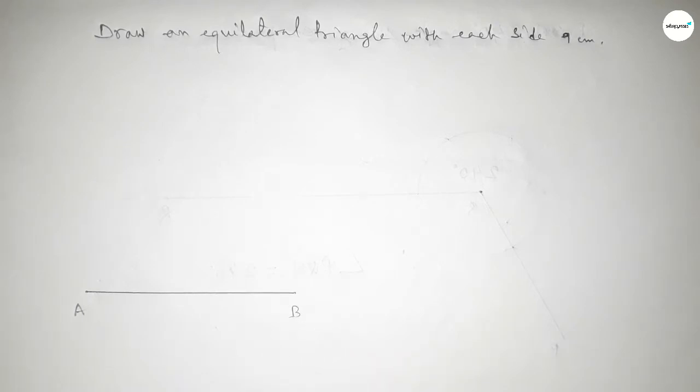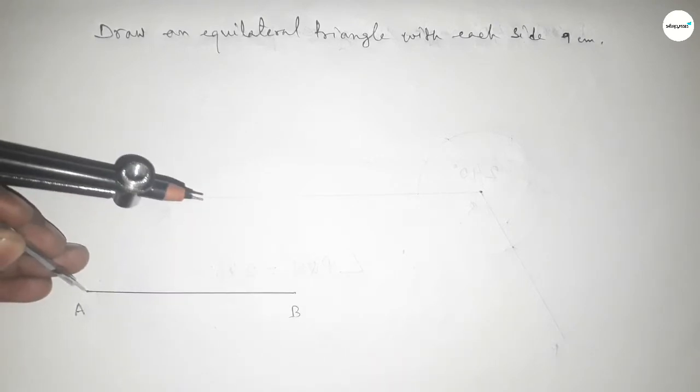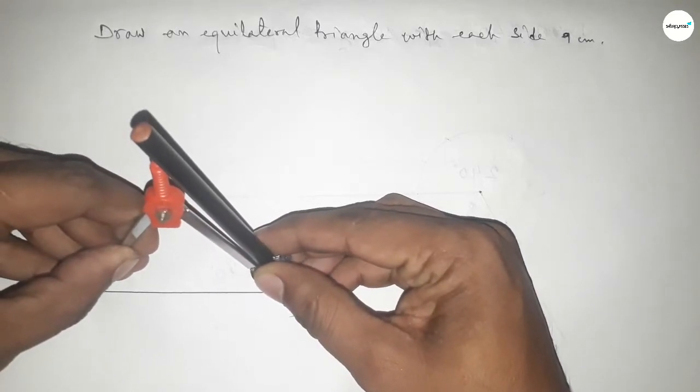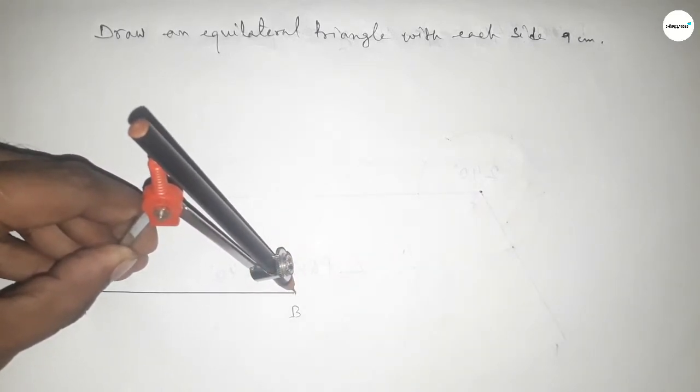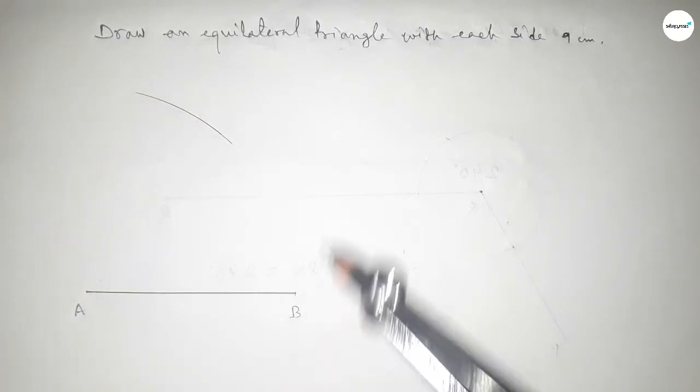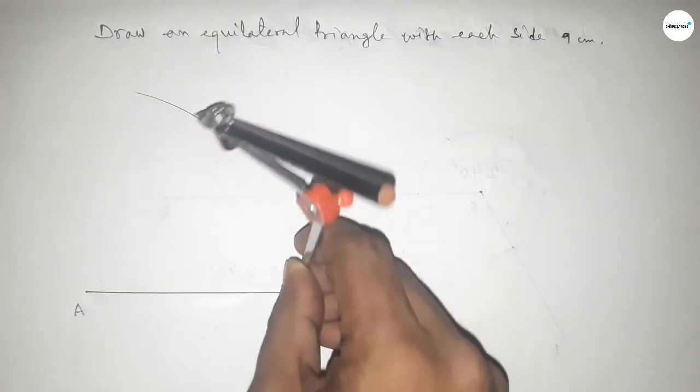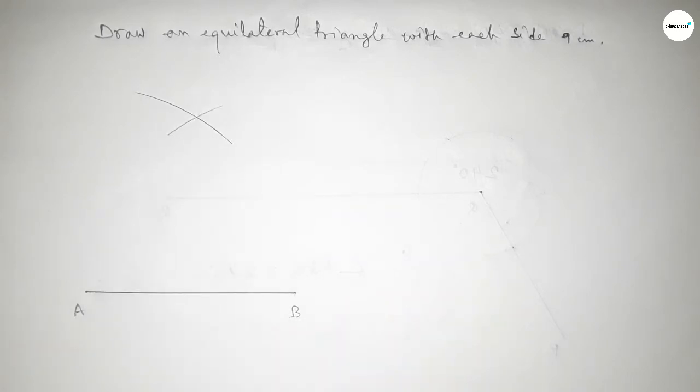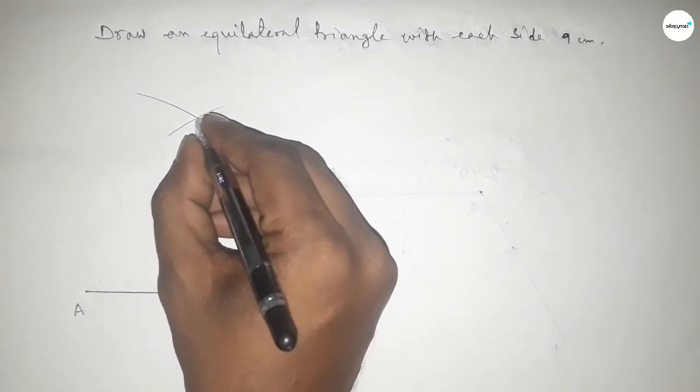So line AB equals 9 centimeters. Now, take the length AB with the compass in this way and draw an arc here. With the same length, put the compass here and draw another arc so both curves intersect at a point.